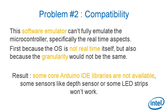The second problem to keep in mind for advanced projects is compatibility. The software emulator can't fully emulate the microcontroller, specifically the real-time aspect of it — first because the OS is not real-time itself running on Galileo or Edison, but also because the granularity would not be the same. The result is that some core Arduino IDE libraries are not available. Most simple code will work exactly the same on Galileo or Arduino, but some sensors or some LED strips won't work easily or won't work at all.